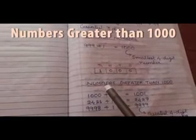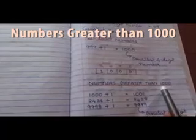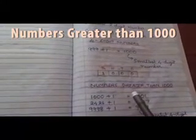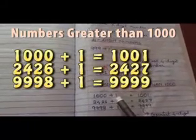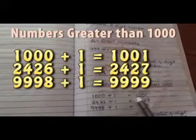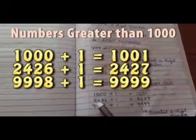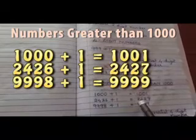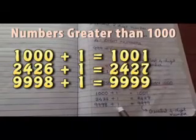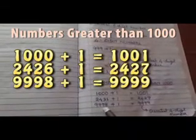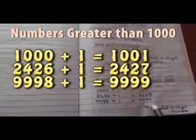Next is about numbers greater than 1000. Each number after 1000 can be obtained by adding 1 to that number. That is, if we are adding 1 to 1000 we will be getting 1001. And if we are adding 1 to 2426 it becomes 2427. And if we are adding 1 to 9998 it becomes 9999, which is the greatest four digit number.